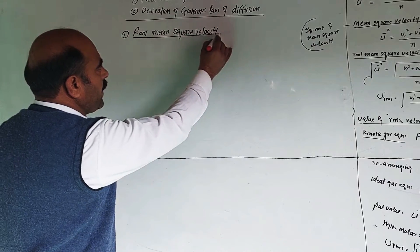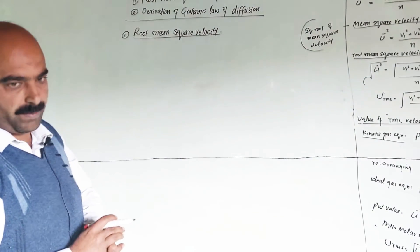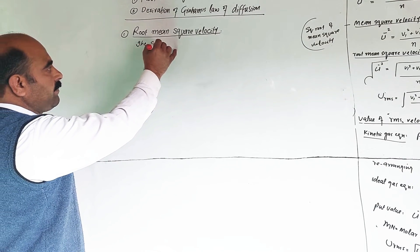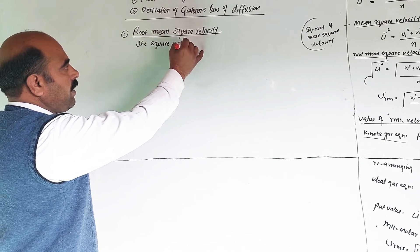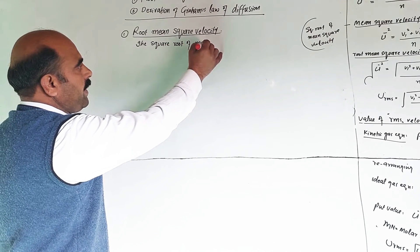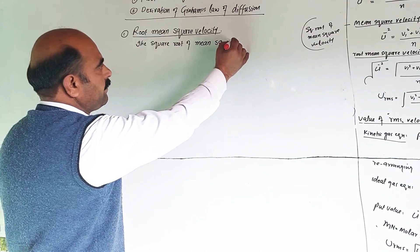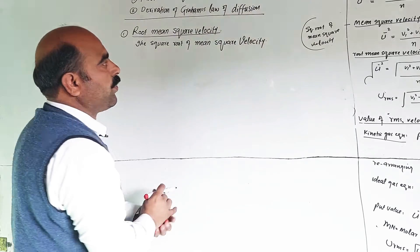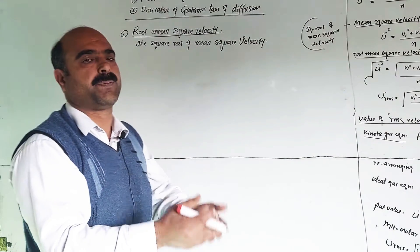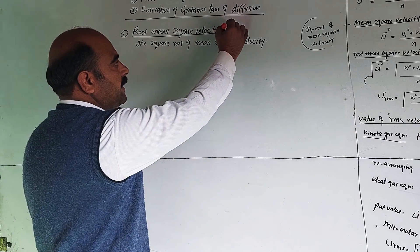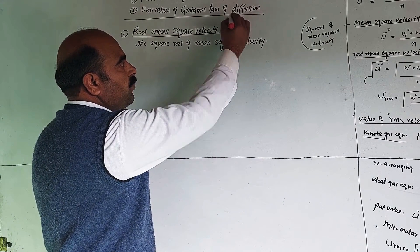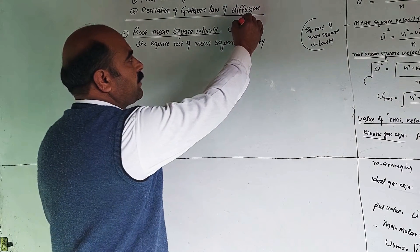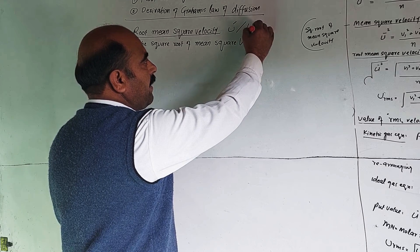Root mean square velocity is the square root of mean square velocity. This is a special type of velocity. It is represented by u, or u prime, or u dash, or u bar.